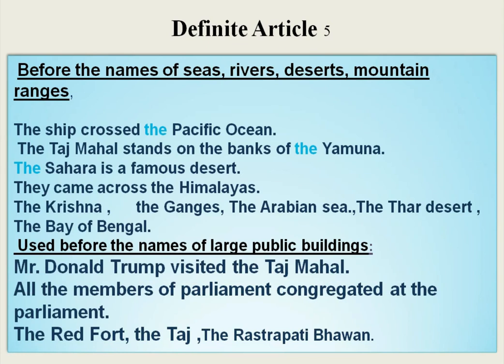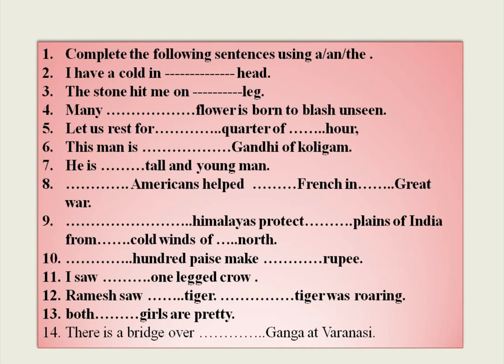We use the definite article before the names of large buildings and monuments. 'Mr. Donald Trump visited the Taj Mahal' — Taj Mahal is a monument. 'All the members of parliament congregated at the parliament' — parliament is the name of a public building. Other examples include the Red Fort, the Taj, the Rashtrapati Bhavan — all public buildings or monuments. With this, we have completed the definite article part.